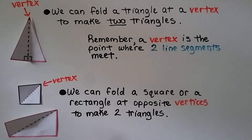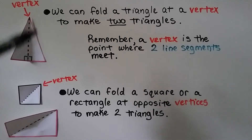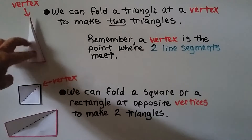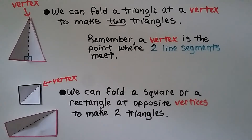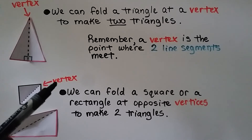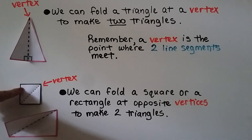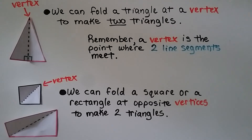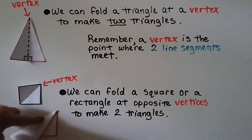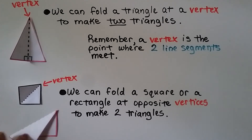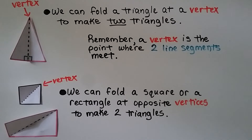We can fold a triangle at a vertex to make two triangles. A vertex is the point where two line segments meet, and we can fold there and make two triangles. We can also fold a square or a rectangle at opposite vertices — if you have more than one vertex, it's called vertices — and make two triangles inside. The triangles produced are the same size as each other.